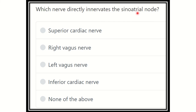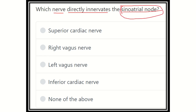The question is: which nerve directly innervates the sinoatrial node? We know the SA node is the pacemaker of the heart — it generates the impulse and propagates it from there. The options are: superior cardiac nerve, right vagus nerve, left vagus nerve, inferior cardiac nerve, and none of the above.